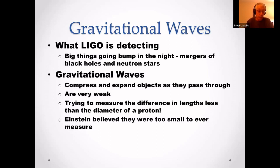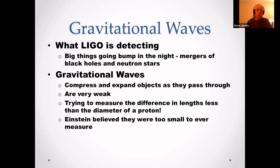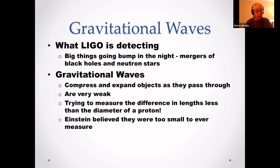Like electromagnetic waves, gravitational waves travel at the speed of light. They distort the fabric of space-time, and the amount of stretch or compression is very small, even for very large events.